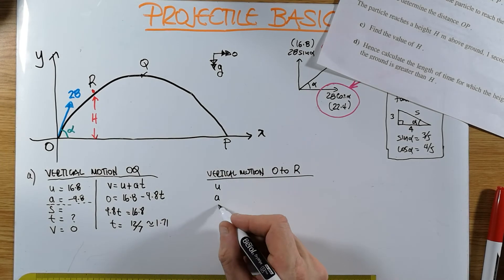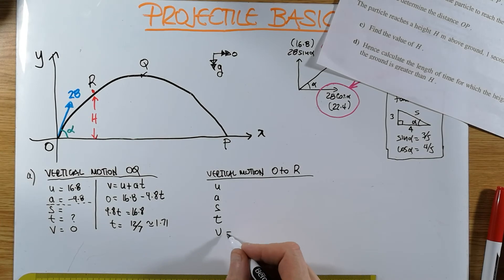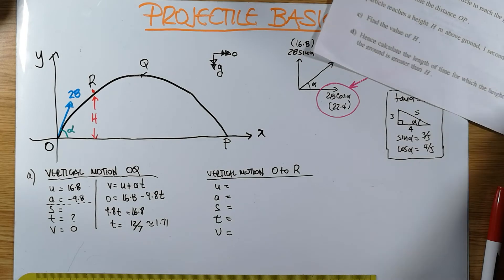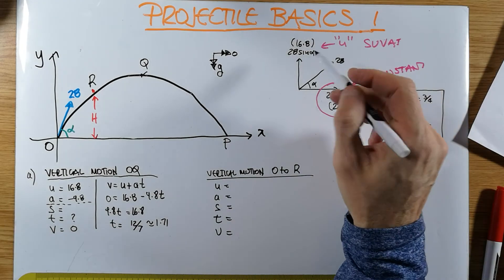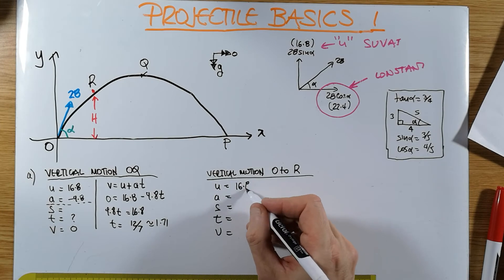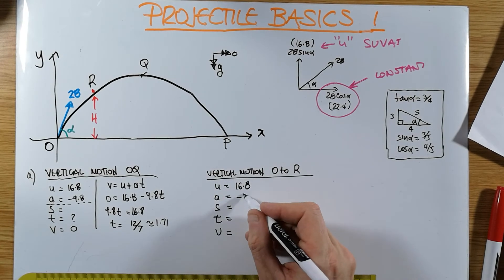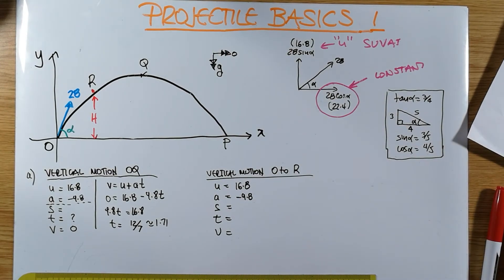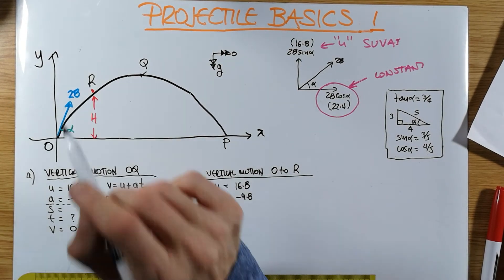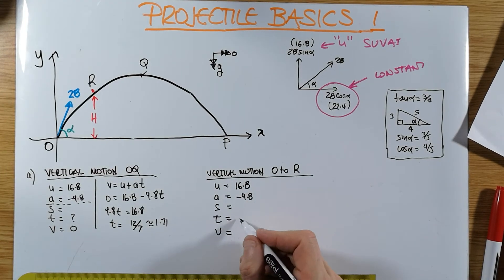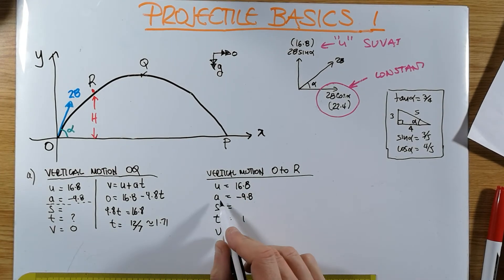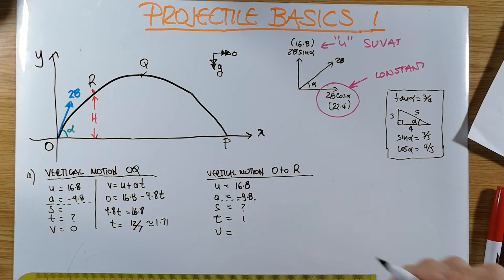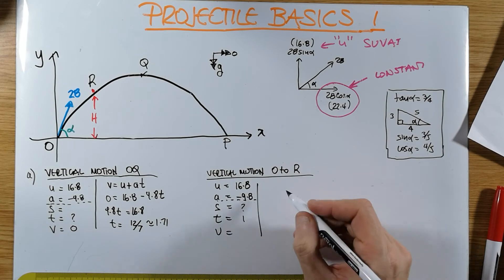Vertical motion O to R. Let's write the particulars. U, A, S, T, and V. What do we know? We're being projected vertically upwards with a speed of 16.8. Subject to an acceleration of minus 9.8. That's downwards. And what do I know about this point? I know it takes one second to get there. So by the time T is equal to 1, what is the S that goes with it? Question mark. So the equation that goes with this is S equals UT plus half AT squared.